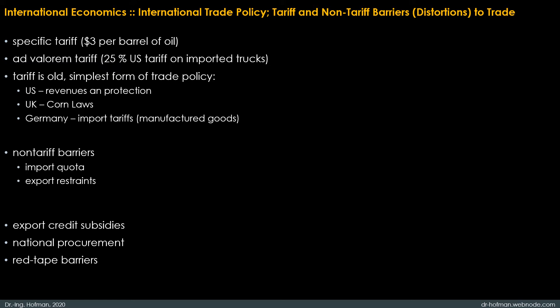There are also other ways in which governments influence trade. First, export credit subsidies: this is like an export subsidy, except that it takes the form of a subsidized loan to the buyer. The United States, like most other countries, has a government institution—the Export-Import Bank—that is devoted to providing at least slightly subsidized loans to aid exports.